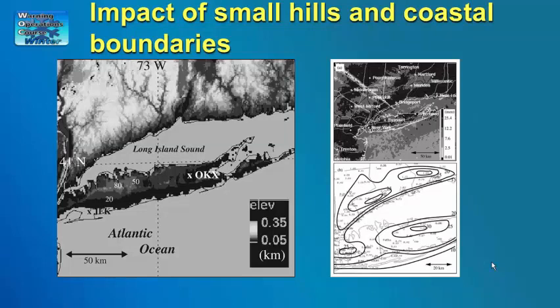Sometimes even minor topographic features can have substantial impacts on precipitation patterns. Images on this slide show results from a study on the impact of differential friction near coastlines and ranges of small hills over central Long Island and southern Connecticut during a widespread rainfall event. The elevation of these hills is only a couple hundred feet, yet radar estimates and rain gauge data show clear maxima of precipitation just inland from the coast over the low hills on Long Island and Connecticut, with a minimum in between along the coastline and over Long Island Sound. High-resolution modeling studies indicated that a gravity wave may have formed over the hills in central Long Island, producing upward motion over the hills and subsidence to the north over Long Island Sound.